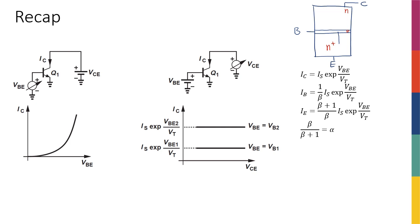Because the base is thin, very few of the electrons recombine with holes in the P-type base material. Since the base is P-type, it doesn't have many electrons to begin with, so when electrons enter the base there is a high concentration at the bottom edge and very few at the top edge. Due to this concentration difference, diffusion drives electrons across the thin base toward the collector, where the reverse-biased base-collector junction creates a strong electric field that shoots them into the collector region.